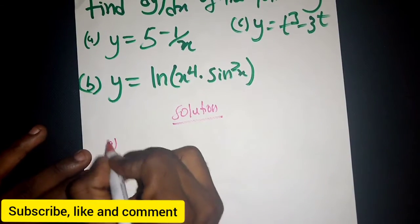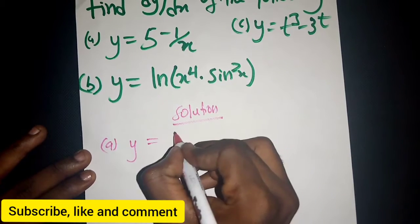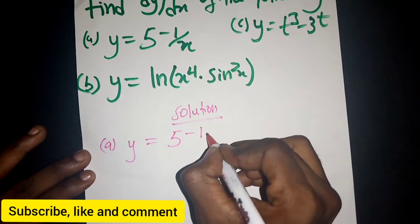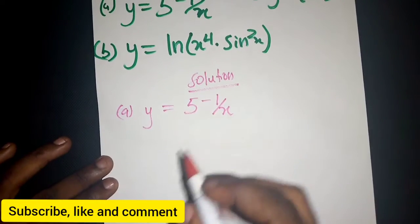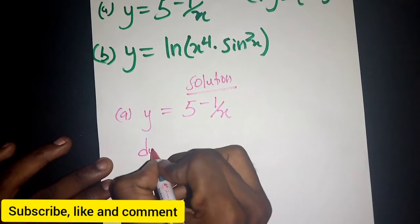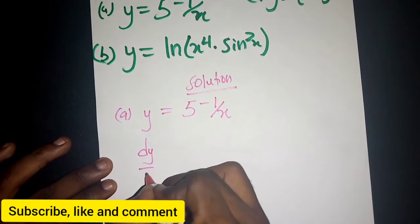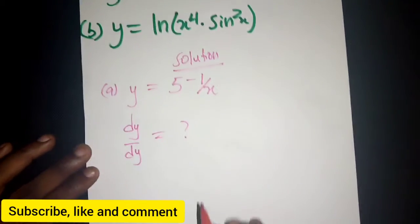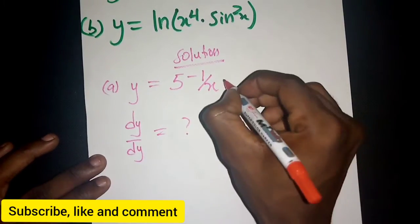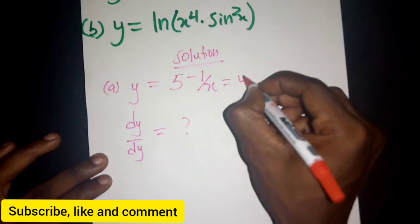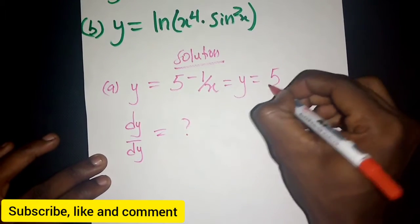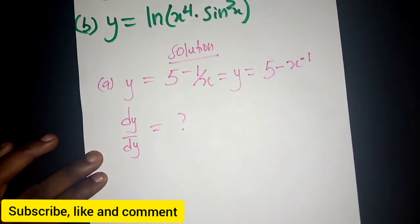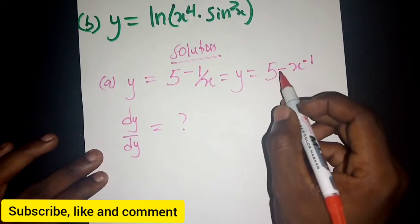We have the first part: y equals 5 to the power of 1/x. We have to find dy/dx. This equation can be written in the form 5 to the power of x to the negative one.